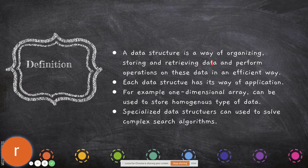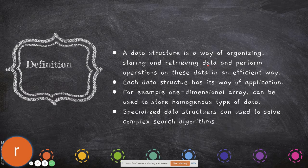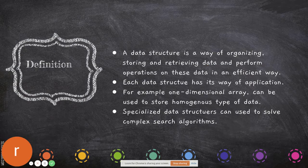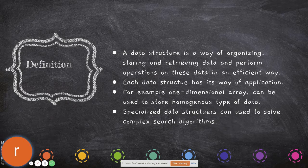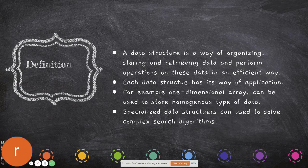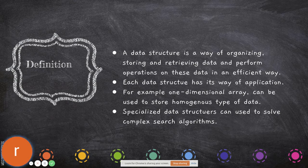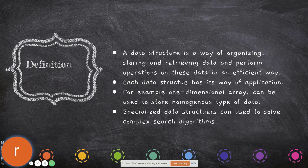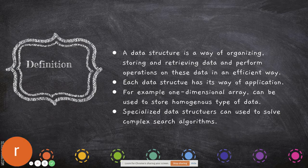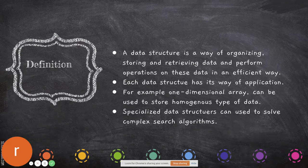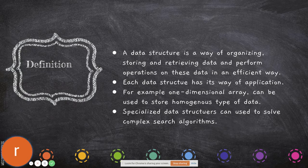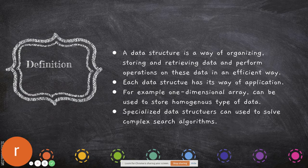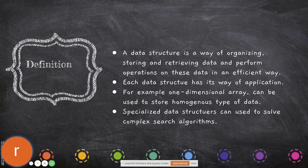Data may be anything from integers and floating points to complex records. Consider a student record - it may consist of different details like personal details, academic records, and placement details. Personal details include roll number, age, date of birth, and so on. Academic records include internal marks, semester exam marks, and credits earned. Placement details include which company they were placed in, salary, and number of offers.